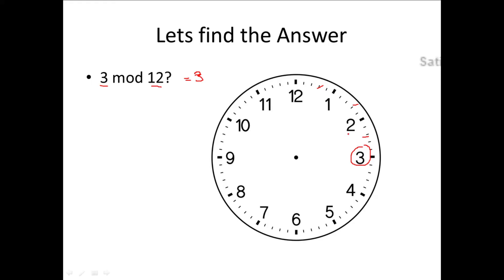We have already seen how to compute 3 mod 12 or 4 mod 12 in a previous session. Let's take another example: what is 7 mod 12? Again, going in the clockwise direction — 1, 2, 3, 4, 5, 6, 7 — the answer is 7. I'm using a 12 o'clock for explaining this because we are working with mod 12.